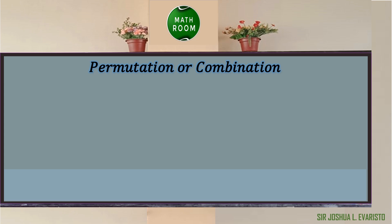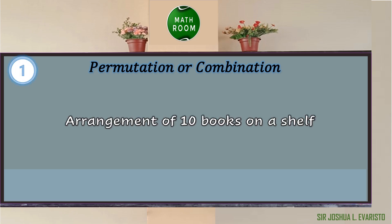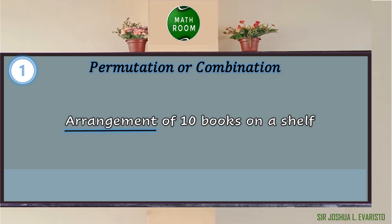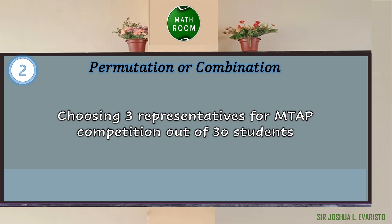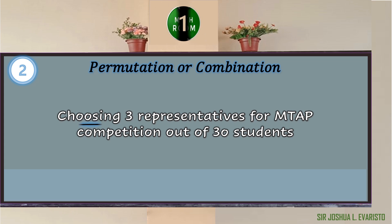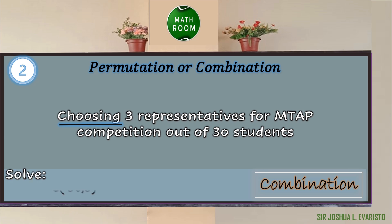Let's have an activity. Determine whether each statement or question involves permutation or combination. Item 1: Arrangement of 10 books on a shelf. The keyword used is 'arrangement,' which makes it permutation. This can be solved using P(10, 10), since we have 10 books and we're going to arrange them all. Item 2: Choosing 3 representatives for an MTOP competition out of 30 students. The keyword is 'choosing,' so we have a combination. This can be solved using C(30, 3).